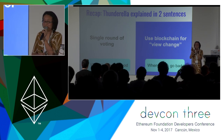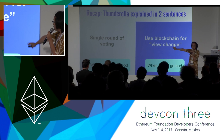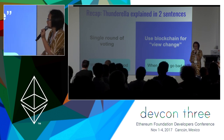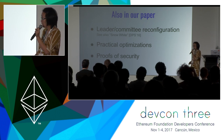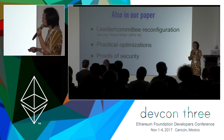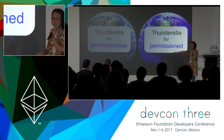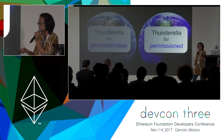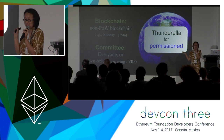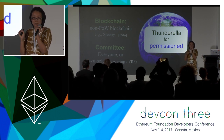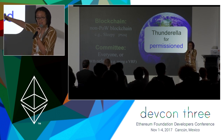Here are the two sentences to remember about Thunderella: when things are good, we conduct a single round of voting; when things go bad, we use the blockchain to do a view change. In the paper we have discussions on how to elect the leader and committee, practical optimizations to make the protocol faster and more scalable, and formal proof of security. Thunderella can also be instantiated for the permissioned setting, which is attractive for companies commercializing consortium blockchains that want high volume and fast confirmation.